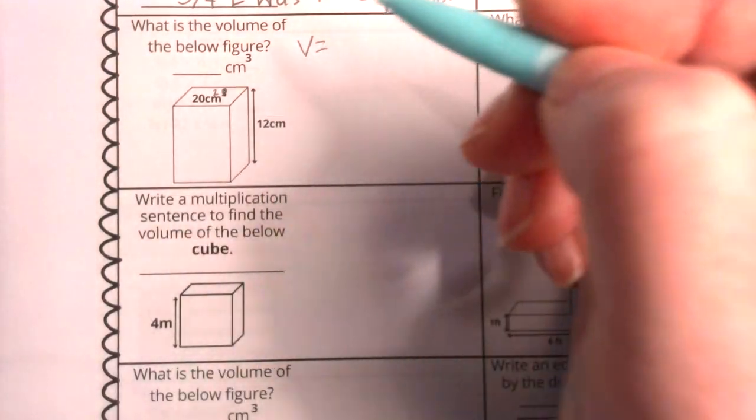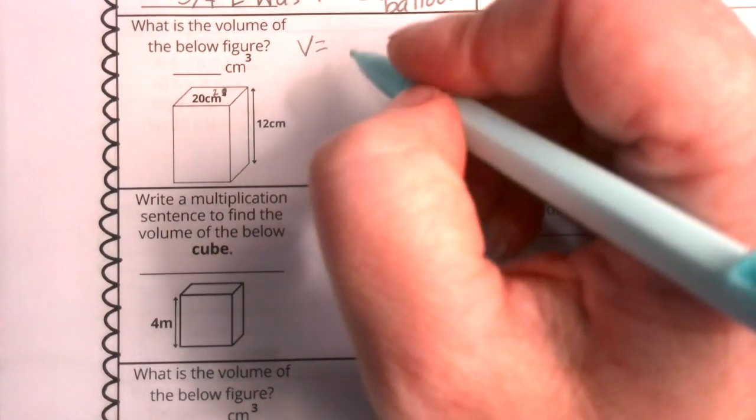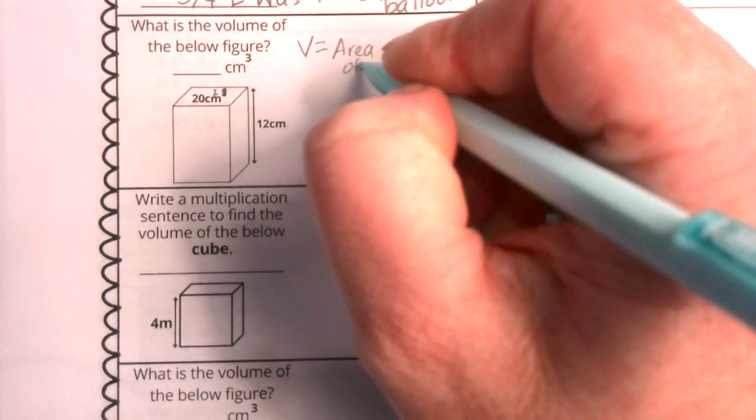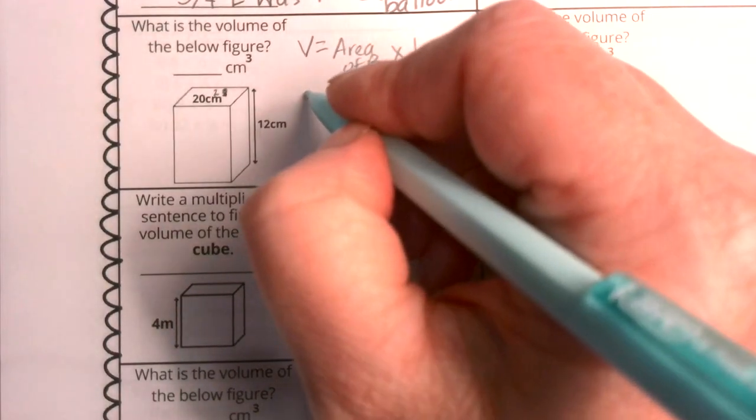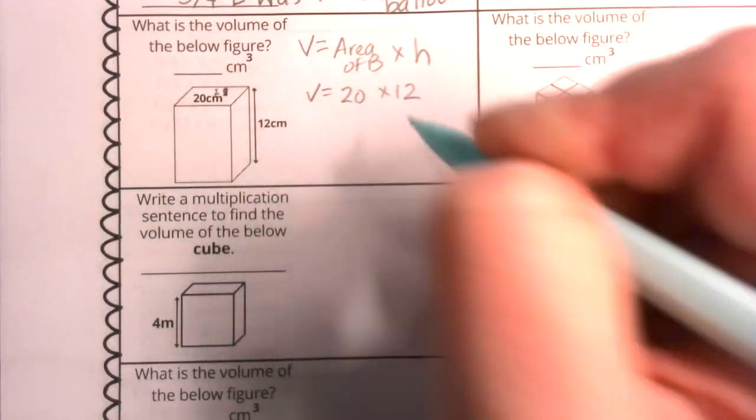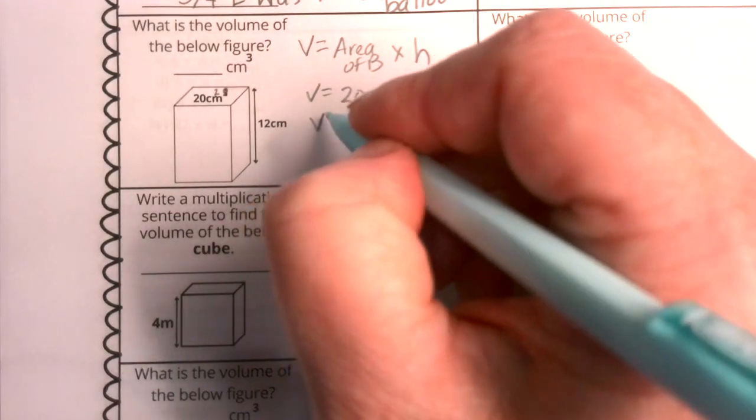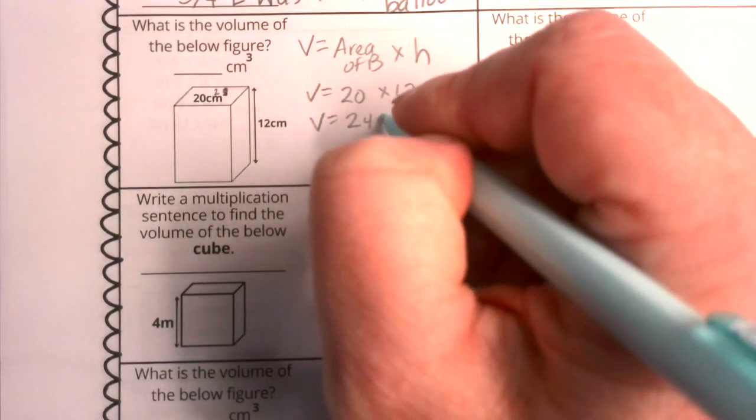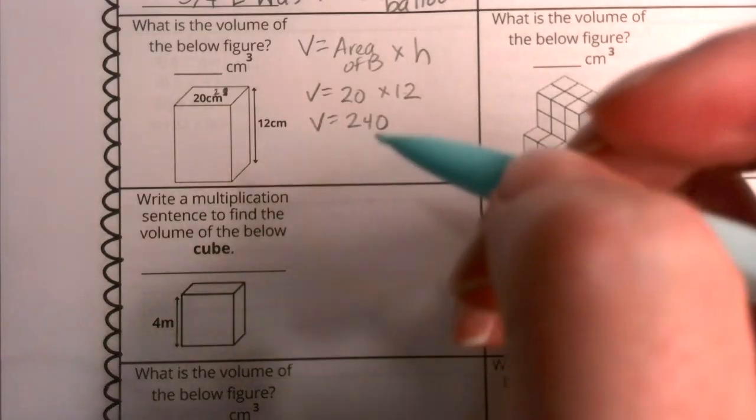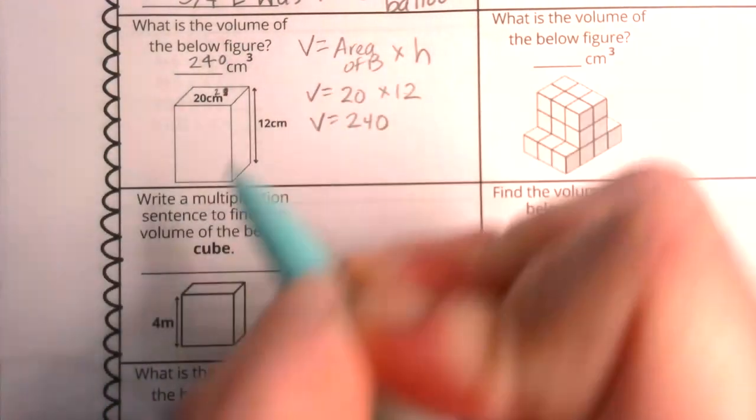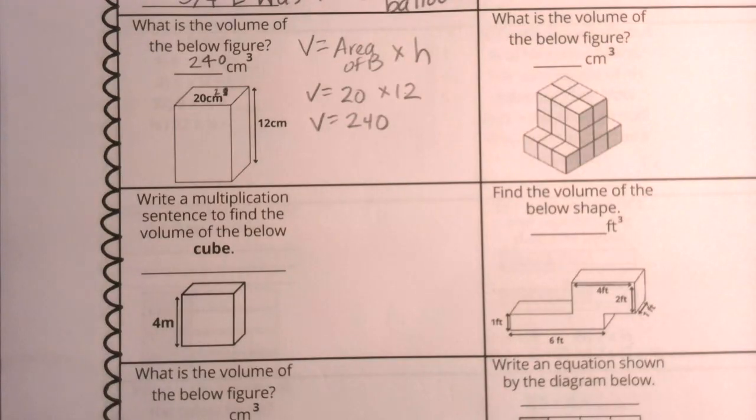I know that volume can also equal the area of the base times the height. So here we're going to use V equals 20 times 12. I know that two times 12 is going to be 24 and then there's a zero outside that basic fact. So that tells me that my answer is 240 centimeters cubed.